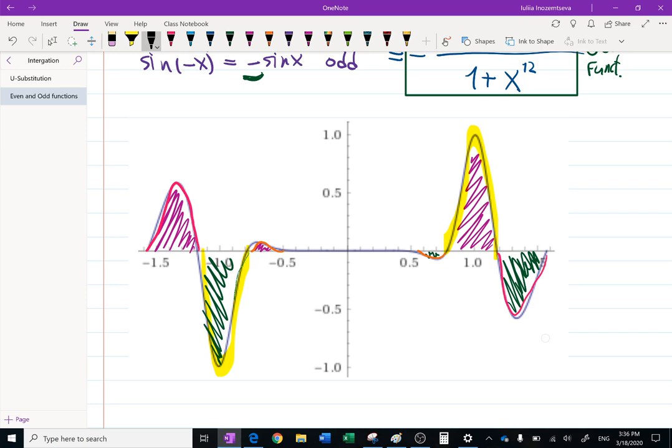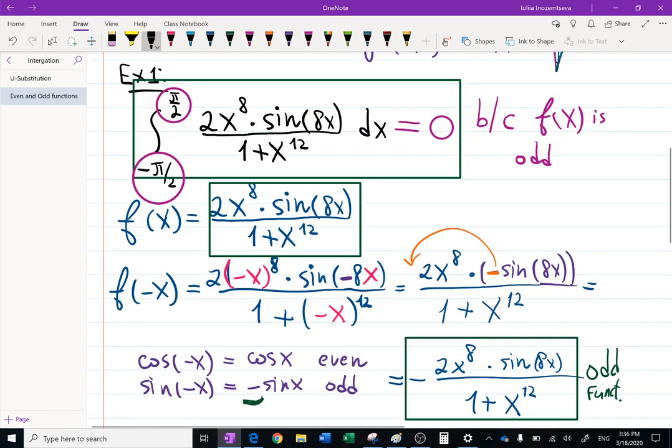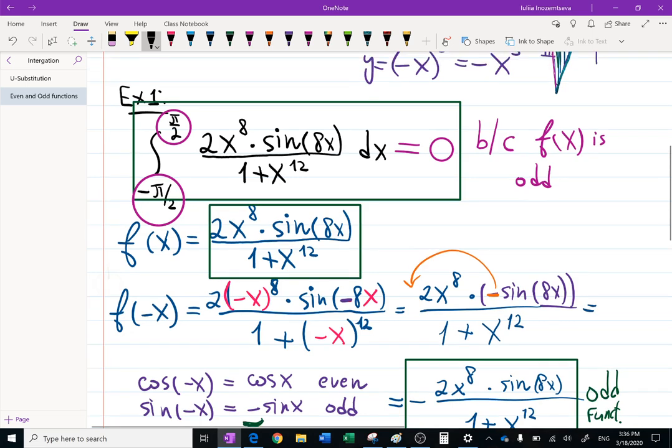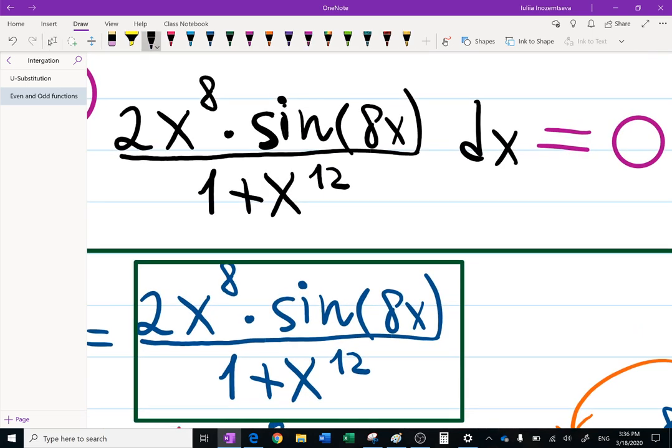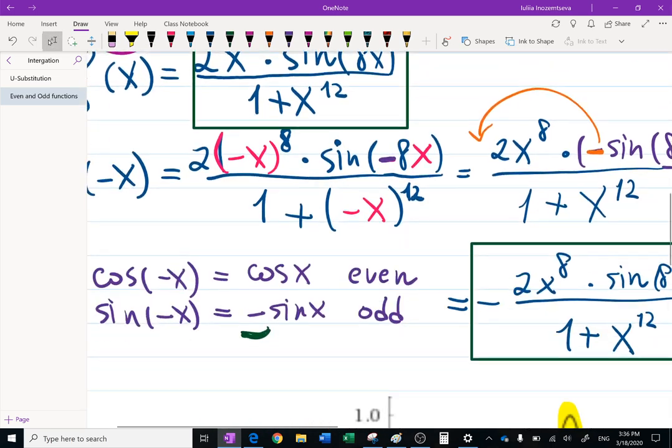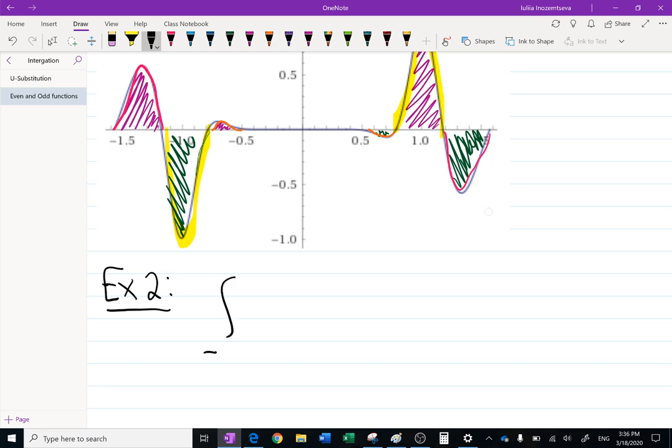One more example is, let's just really fast have an example with an even function. And you know, I don't want to give you something complicated. But technically speaking, if you change this sine into cosine, then cosine will swallow the negative sign and the whole function will become even. But that will be hard to integrate. So I wanted to integrate something simpler. Say from negative pi over 2 to pi over 2.